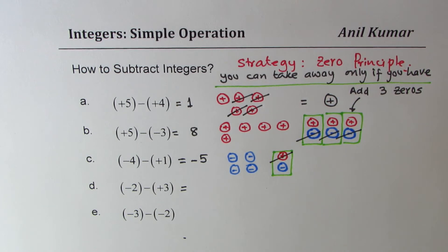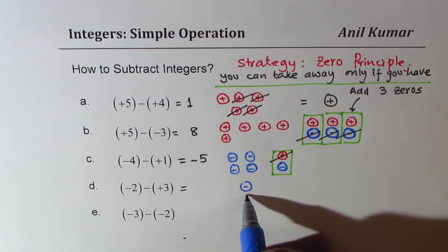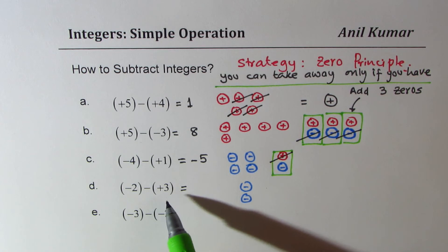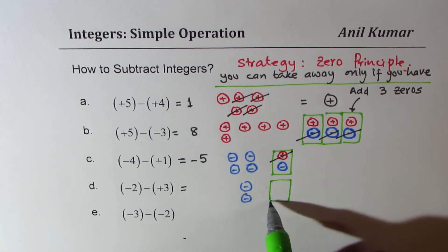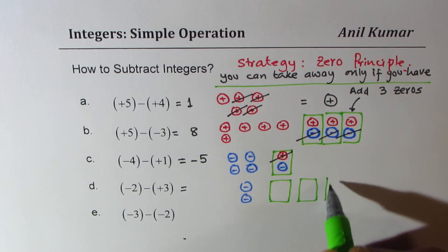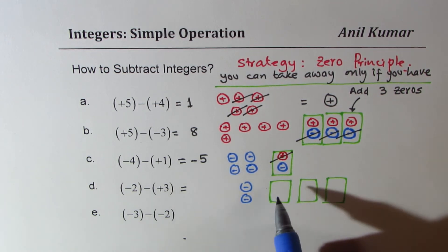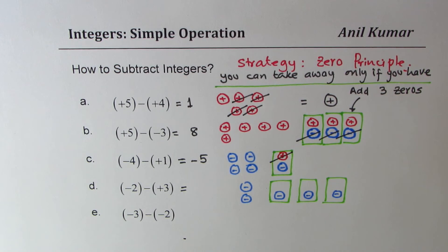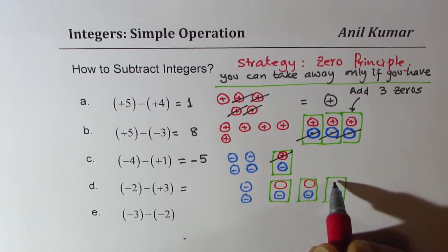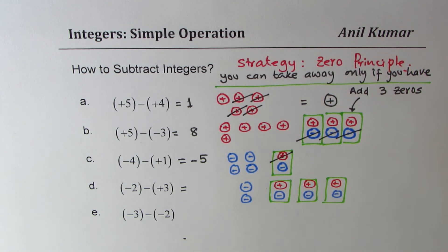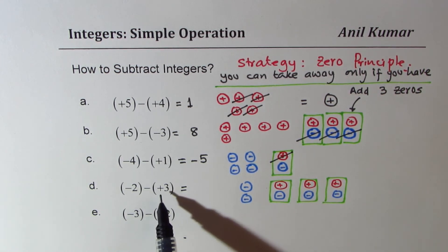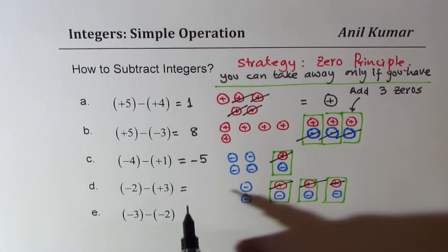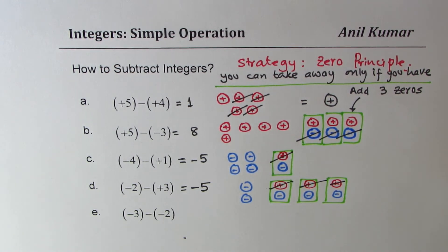Minus 2 minus plus 3 — that means we have 2 negatives. We want to take away plus 3 but we do not have any positives, so I will add 3 zeros so that I could take away 3 positives. These 3 zeros will have a combination of 3 negative and 3 positive numbers, but that will help us to take away 3 positives. We are left with 5 negatives.